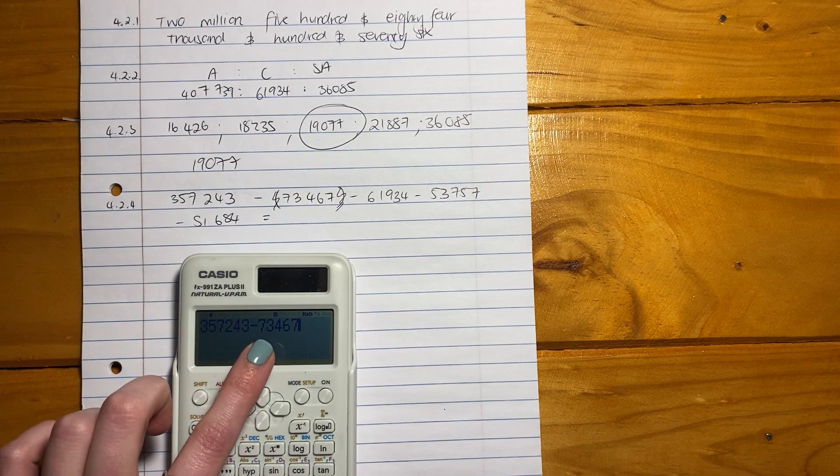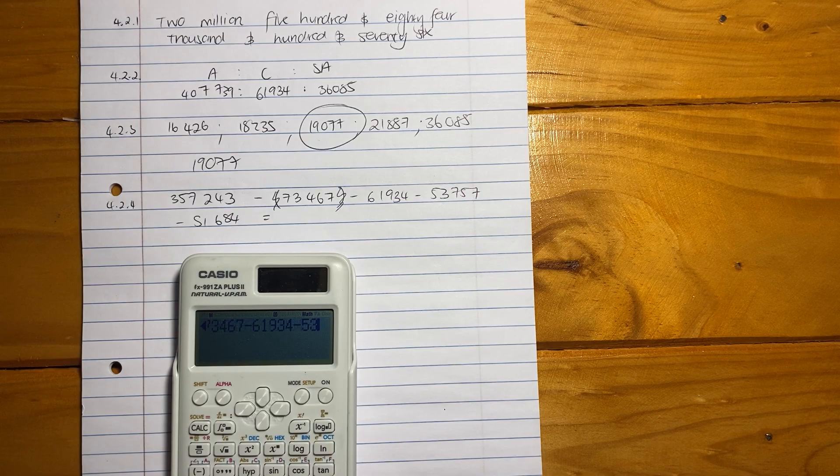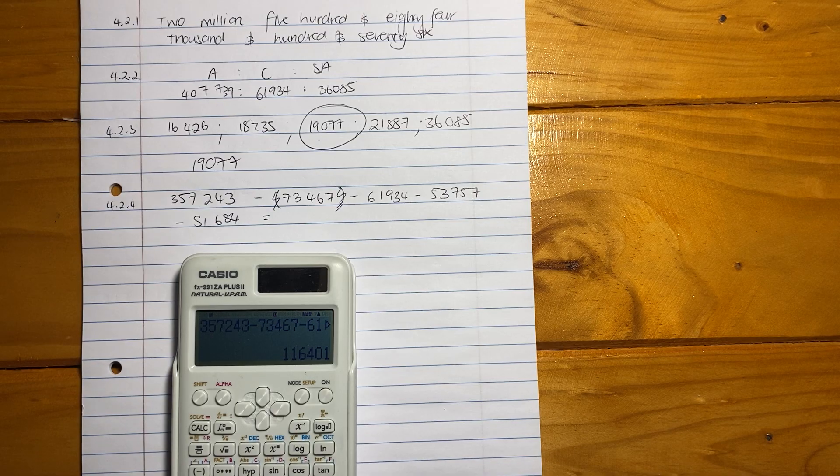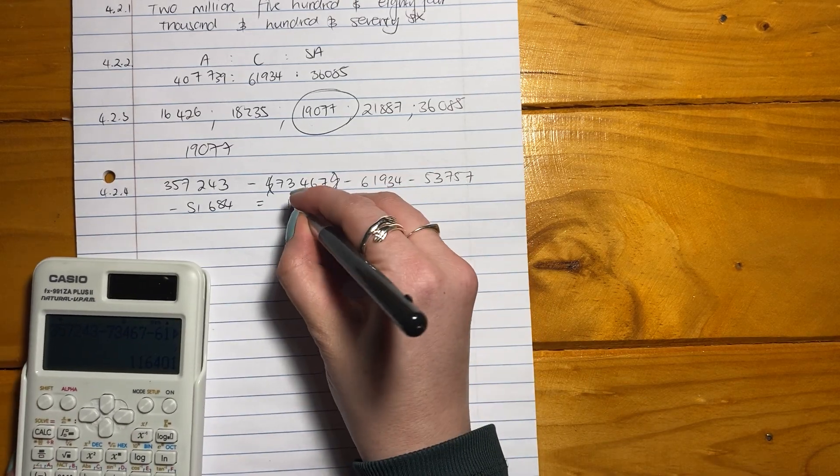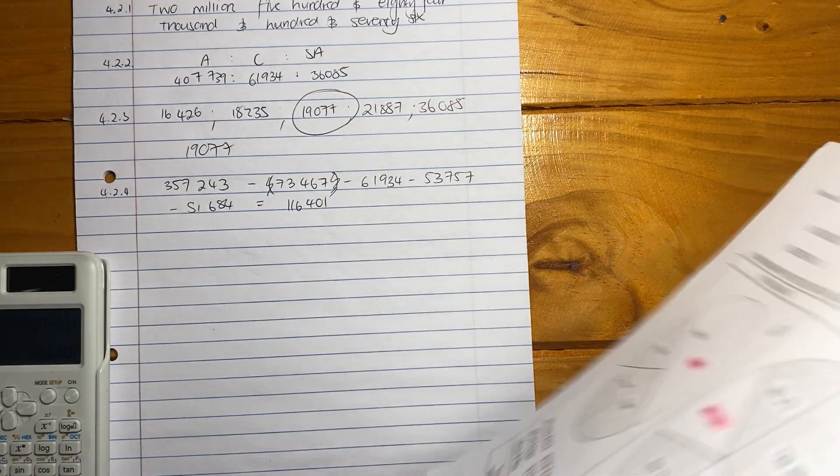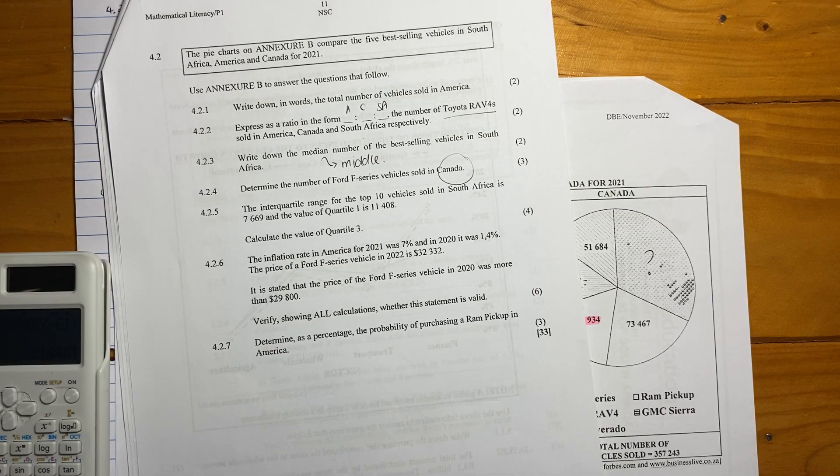All we need to do now is make sure that we are putting this into our calculator correctly. This is often where students make silly mistakes or careless mistakes. 61,934 minus 53,757 minus 51,684. And the number of Ford F-Series from my calculation is 116,401. And that is your answer there. Three marks. Easy.